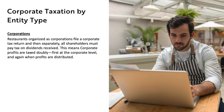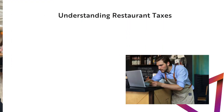When it comes to corporations, restaurants organized as corporations file a corporate tax return, and then separately, all shareholders must pay tax on dividends received. This means corporate profits are taxed doubly — first at the corporate level, and then again when profits are distributed.